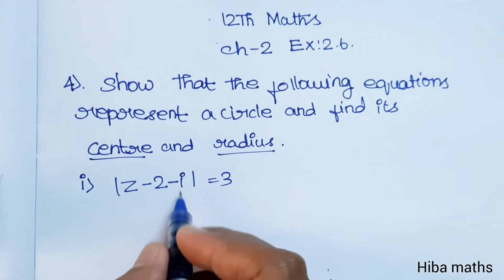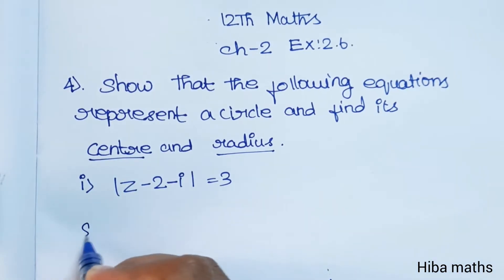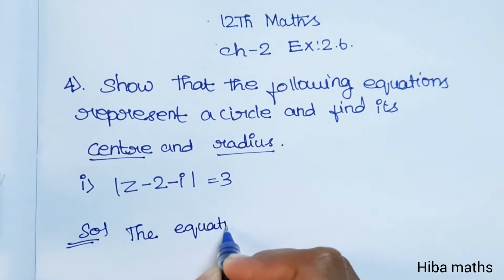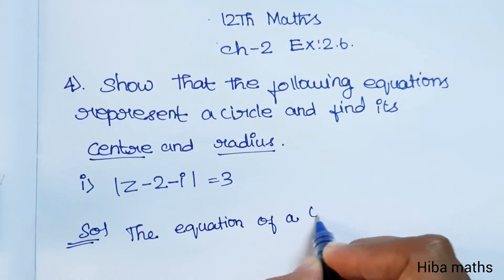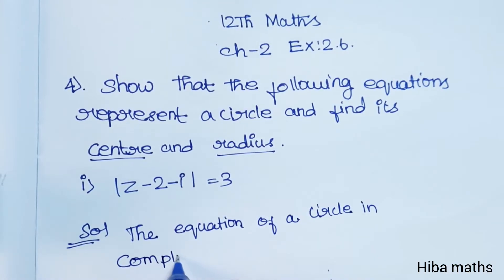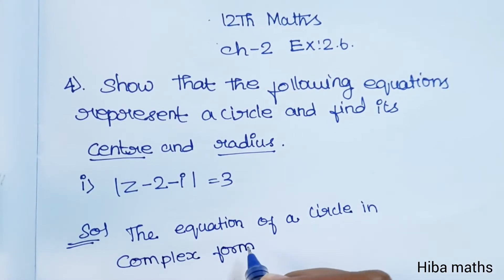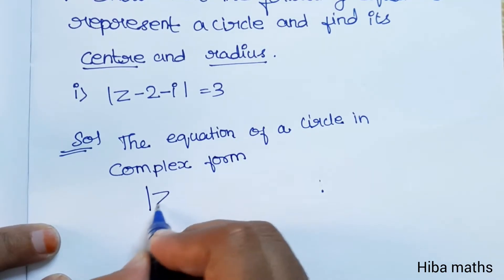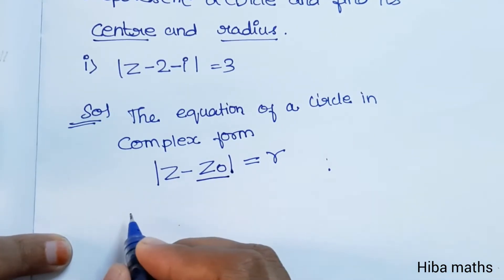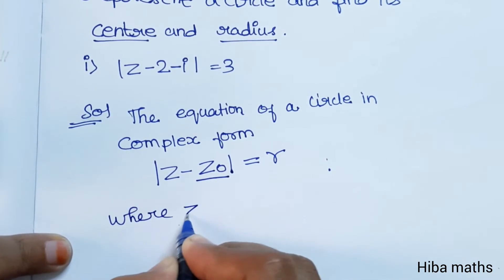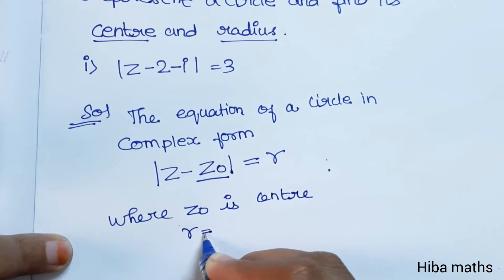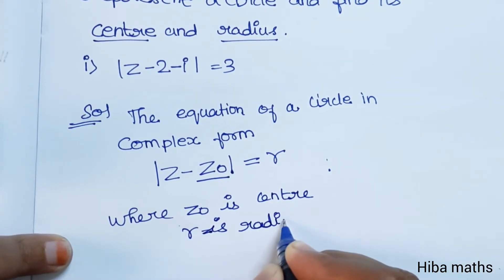First question: modulus of z minus 2 minus i is equal to 3. The equation of a circle in complex form is modulus of z minus z₀ equal to r, where z₀ is the center and r is the radius. We compare the given equation to this format to find the center and radius.